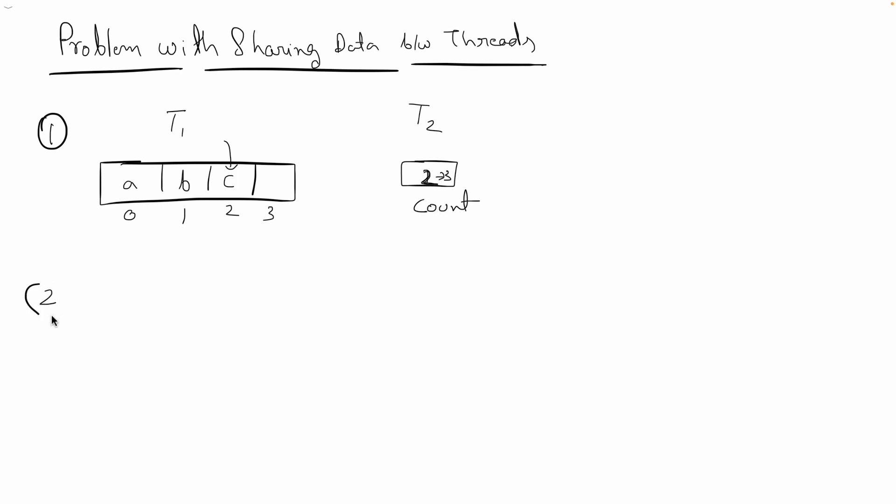I'll give you another example so it will make more sense. Let's say we have a doubly linked list - I found this example somewhere and it is a really cool example. So we have this doubly linked list. Let's say we have 1, 2, 3, and 4. Let's say t1 is actually traversing this doubly linked list and t2 is going to delete this node.